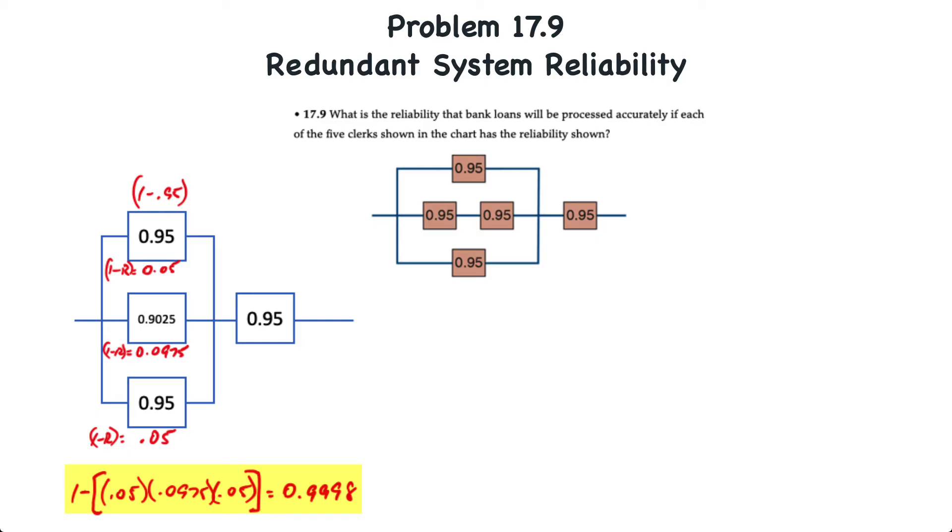So, the overall reliability of the parallel system inside the box is 1 minus, and open your brackets, 0.05 times 0.0975 times 0.05. And that will be 0.9998 or 99.98%.